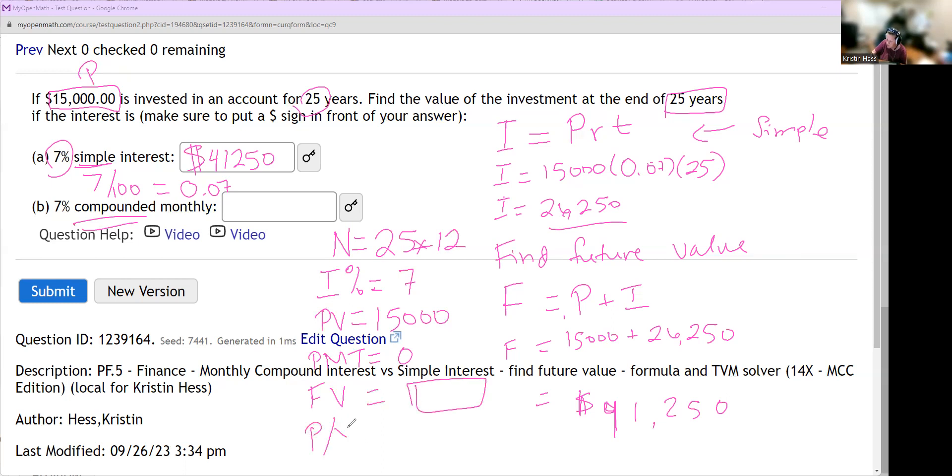FV is the future value. And that's what we're solving for. And then it's going to have P/Y periods per year and C/Y, that's compounding per year. And both of those are going to match whatever we multiply the year by. And in this case, monthly. So 12 for both of those. So plug that into your solver and click solve for the future value.